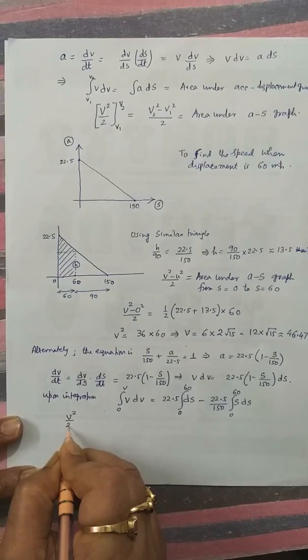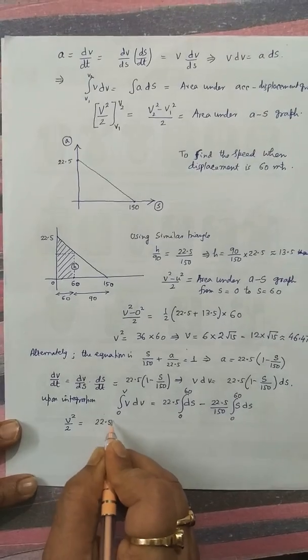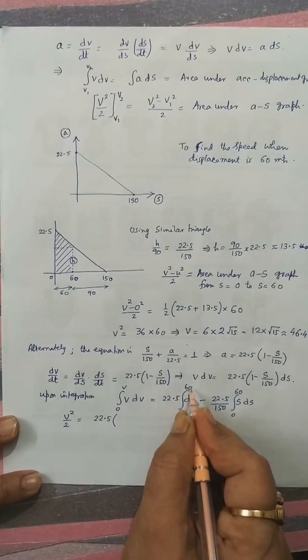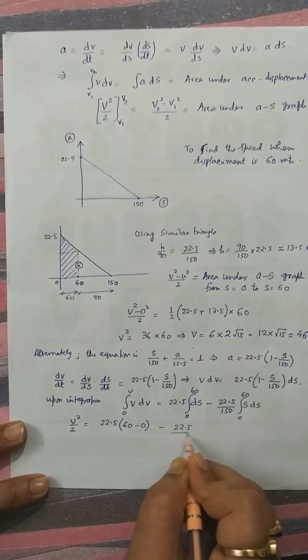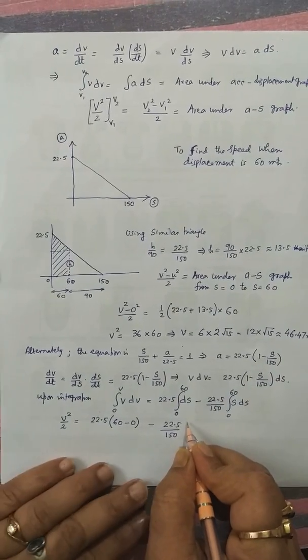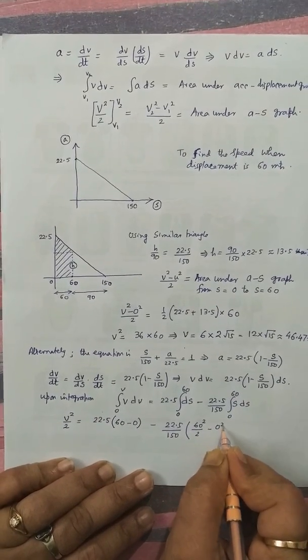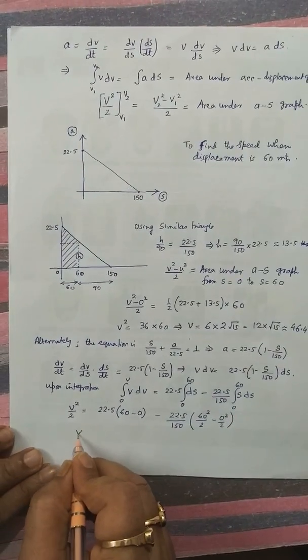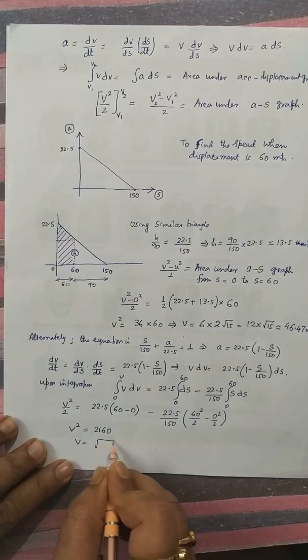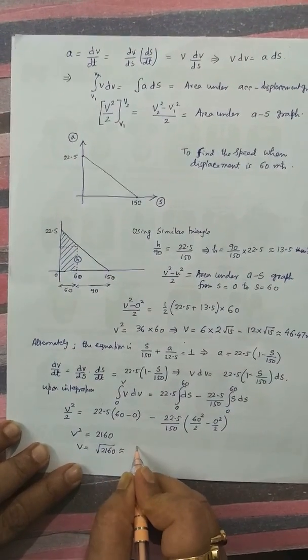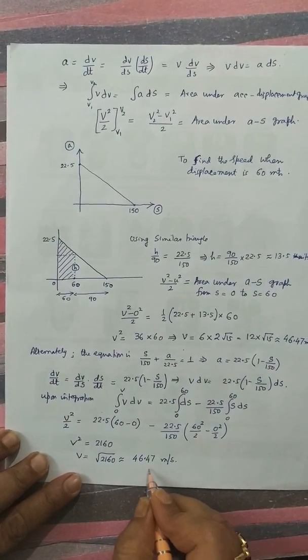Solving v square by 2 as it is having 0 as lower limit is 22.5 integration of ds is s, directly putting the upper minus the lower limit, minus 22.5 by 150 integration of s is s square by 2. V square as 2160 and v as root over 2160 which is nearly 46.47 meter per second. This is the result.